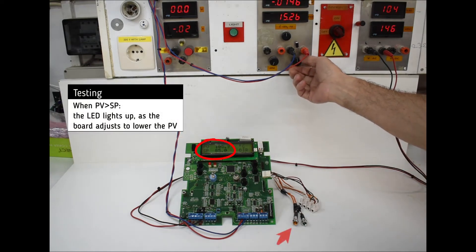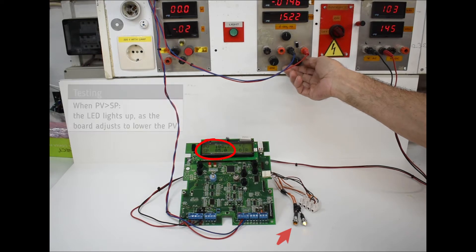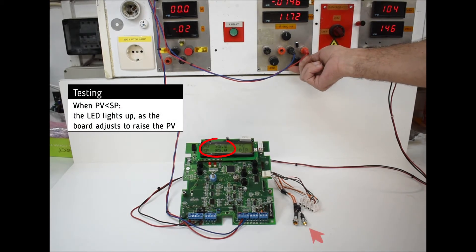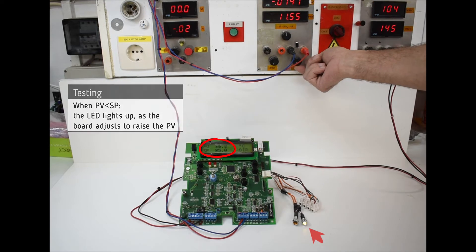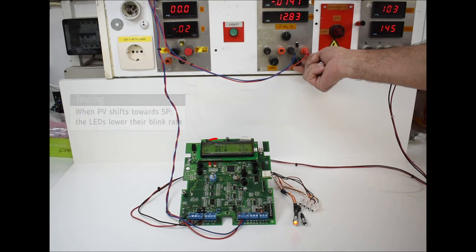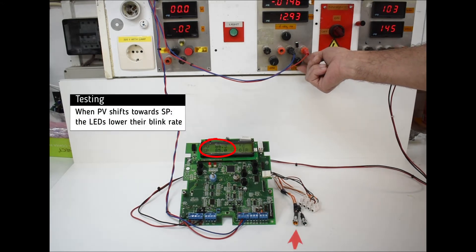As the process variable exceeds the set point, the controller attempts to lower the value and the LEDs light up. As the process variable is far lower than the set point, the controller attempts to raise the value and the LEDs light up. As the process variable nears the set point, the LEDs lower the blink rate.